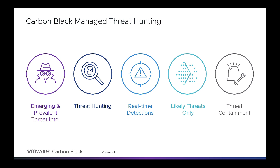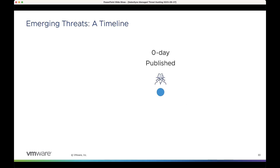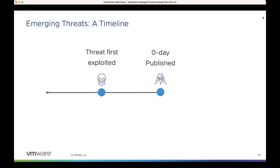They'll then hunt for new or evolving threats with your EDR data and continuously monitor for real-time exploitation attempts. So let's take a look at a typical emerging threat timeline. Let's say on day zero, the Carbon Black MDR Analyst team discovers threat actors leveraging a new exploit, like a zero day, for Microsoft Excel. No one knows it yet, but threat actors exploited the zero day in a customer environment before the vulnerability was discovered.